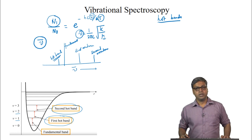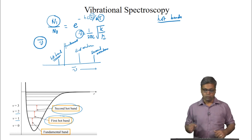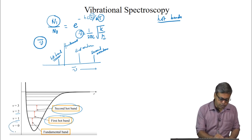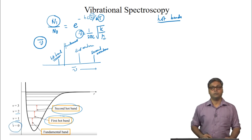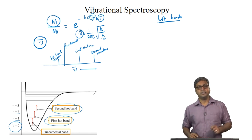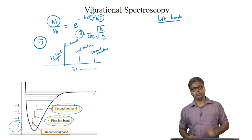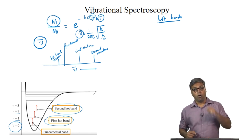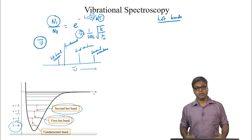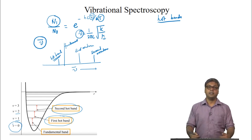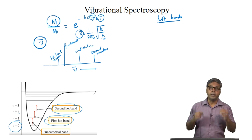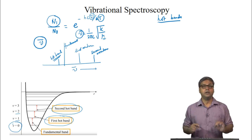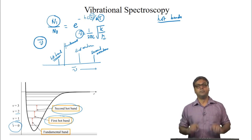This behaviour is not the same as for overtones. With overtones, the initial state is always V=0, so the intensities of the overtones decrease with increasing temperature in the same way that the intensity of the fundamental band decreases.